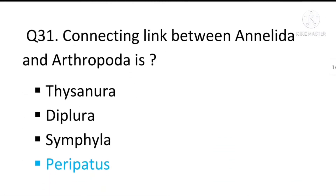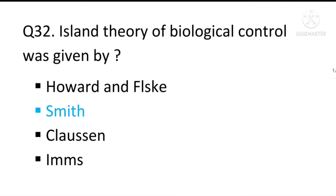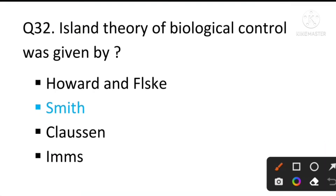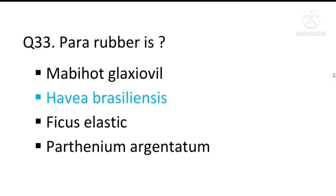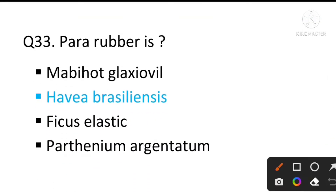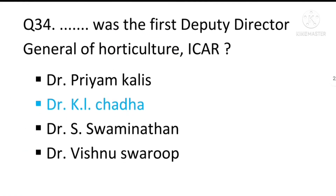Question number 31: The connecting link between Annelida and Arthropoda is Peripatus. Question number 32: The island theory of biological control was given by Smith. Question number 33: Para rubber belongs to Hevea brasiliensis.